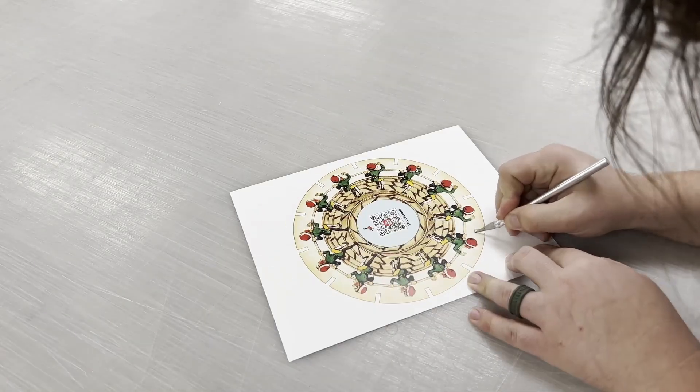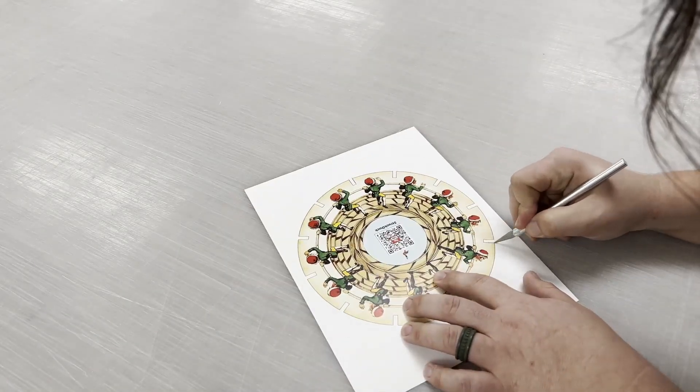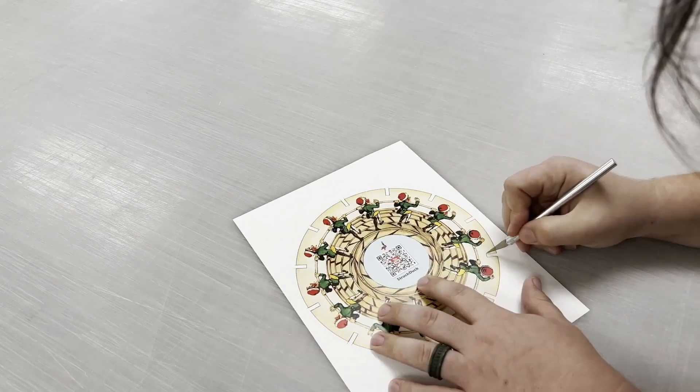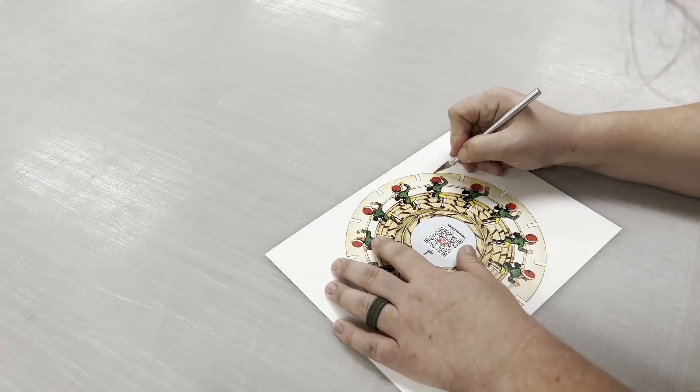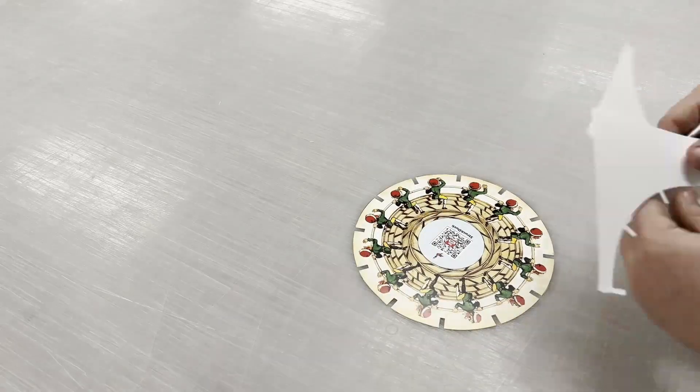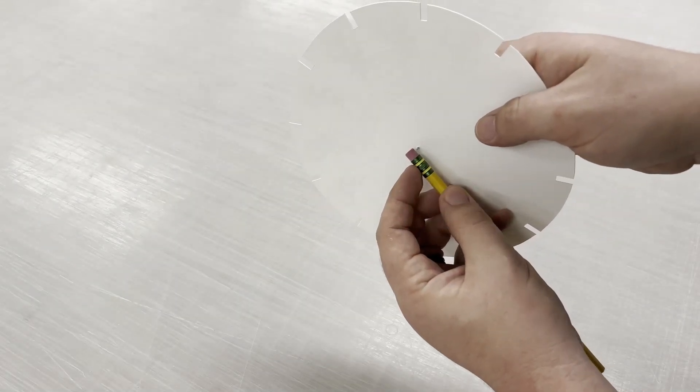You can make a simple phenakistoscope at home by downloading one of the free animation discs from the link in the description. Print it onto some cardstock, cut it out, and tack it through the center to a pencil eraser.